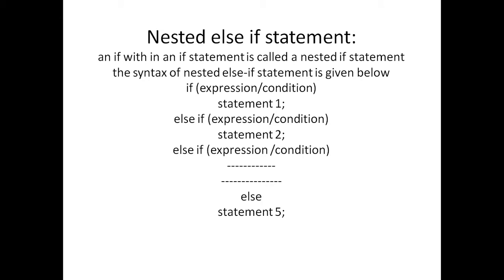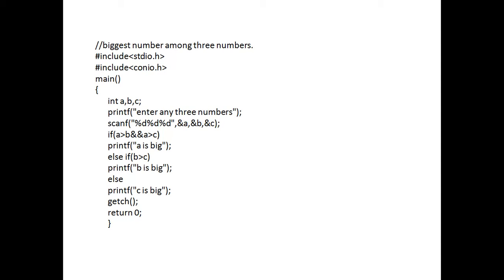Now, with the help of a nested else-if statement, we will write a program to find the biggest among three numbers. Include stdio.h and conio.h, main function with curly braces, int a, b, c. printf 'enter any three numbers', scanf %d %d %d with &a, &b, &c. Logic: if a is greater than b AND a is greater than c, printf 'a is bigger'; else if b is greater than c, printf 'b is big'; else printf 'c is big'. Then getch and return zero.